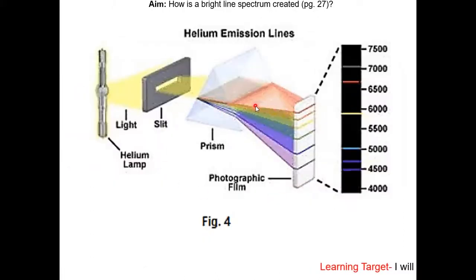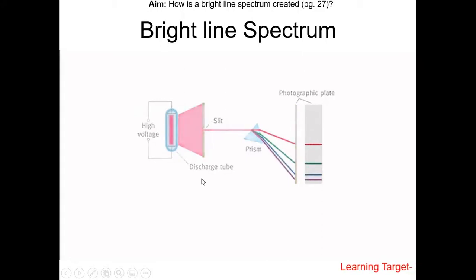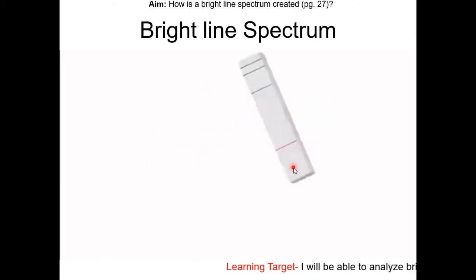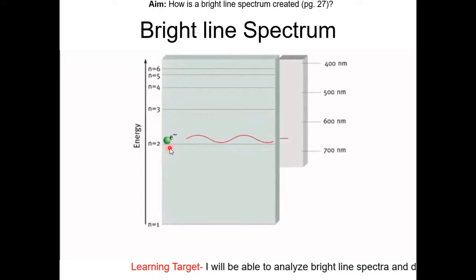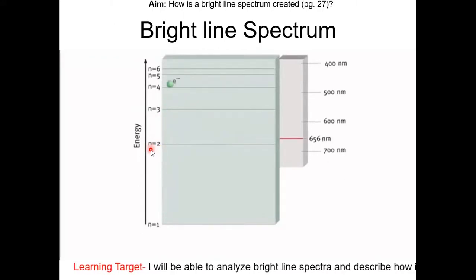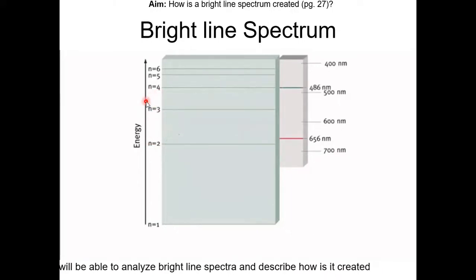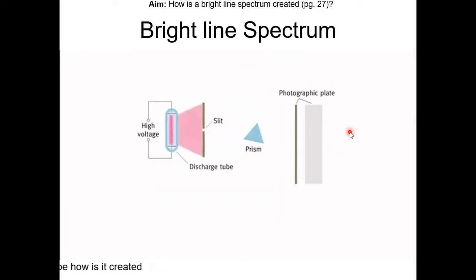Here's another diagram showing the production of the helium bright light spectrum. This GIF animation is showing the production of the hydrogen bright light spectrum. This spectrum has four lines — each line represents the energy released from the electron when it goes from a high energy level to a lower energy level. N stands for the energy level in the atom. You can watch this GIF as many times as you want on my PowerPoint.